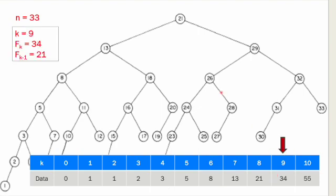Based on K equal to 9, FK equals 34, FK-1 equals 21. The first comparison is at element position 21. If the key value is less than the element at position 21, we search the left half; if greater, we search the right half.